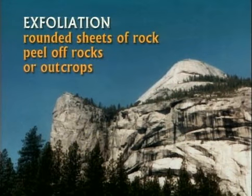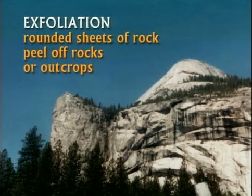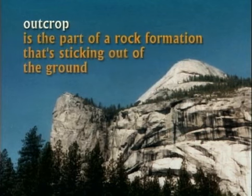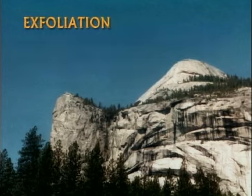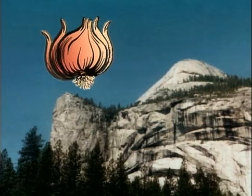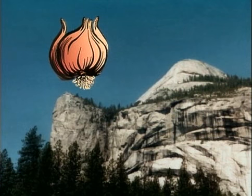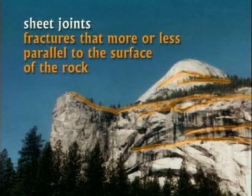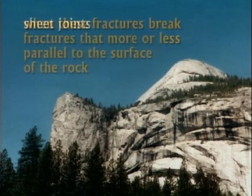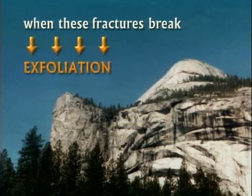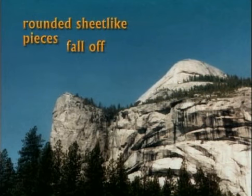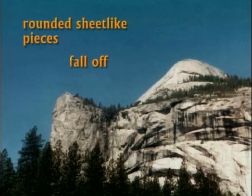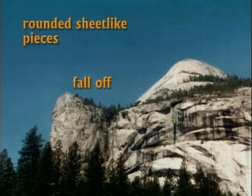Exfoliation is when rounded sheets of rock peel off rocks or outcrops. An outcrop is just the part of a rock formation that's sticking out of the ground. Exfoliation is like layers falling off a big onion. It happens to rocks that have sheet joints — fractures that run more or less parallel to the surface of the rock. When these fractures break, rounded sheet-like pieces fall off, producing a rounded blob of rock called an exfoliation dome.